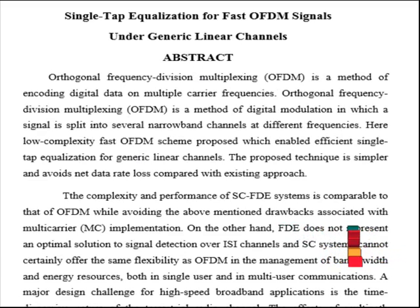Orthogonal frequency division multiplexing (OFDM) is a method of encoding digital data on multiple carrier frequencies. It's a method of digital modulation in which a signal is split into several narrowband channels at different frequencies.